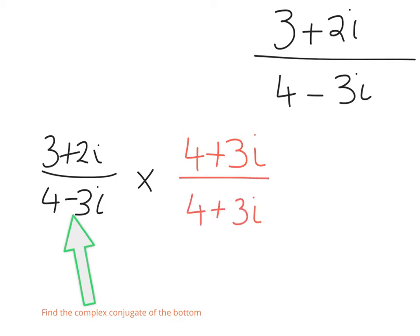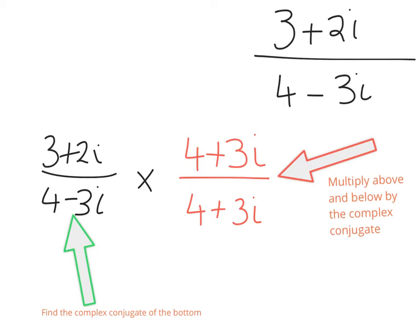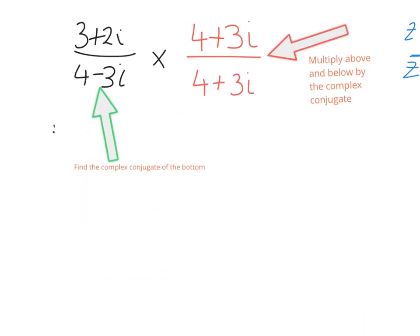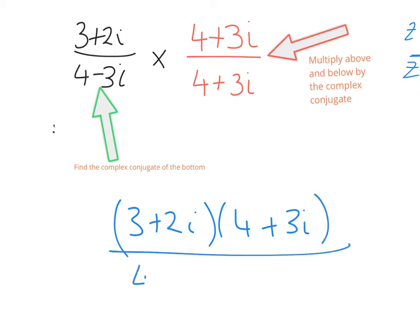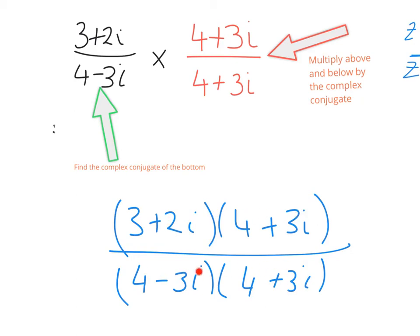We multiply above and below by four plus three i. So on the top we have three plus two i multiplied by four plus three i, and on the bottom we have four minus three i multiplied by four plus three i. The hard part is setting it up correctly — now we'll do box multiplication on the top line, then the bottom line, and bring the answers together.